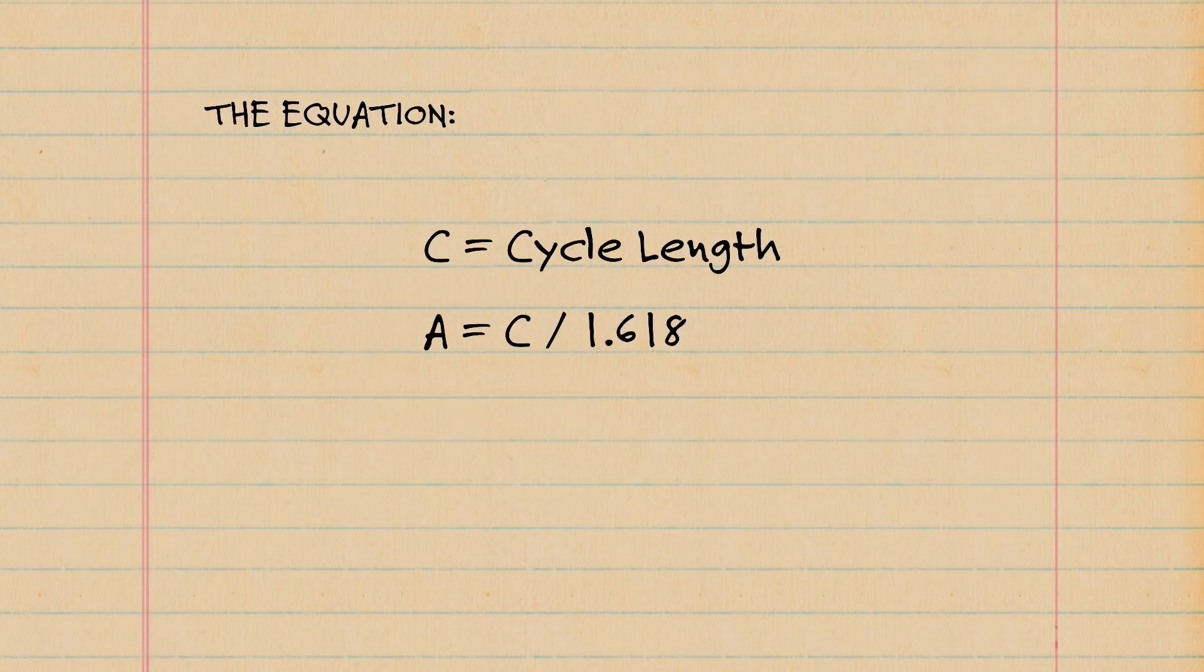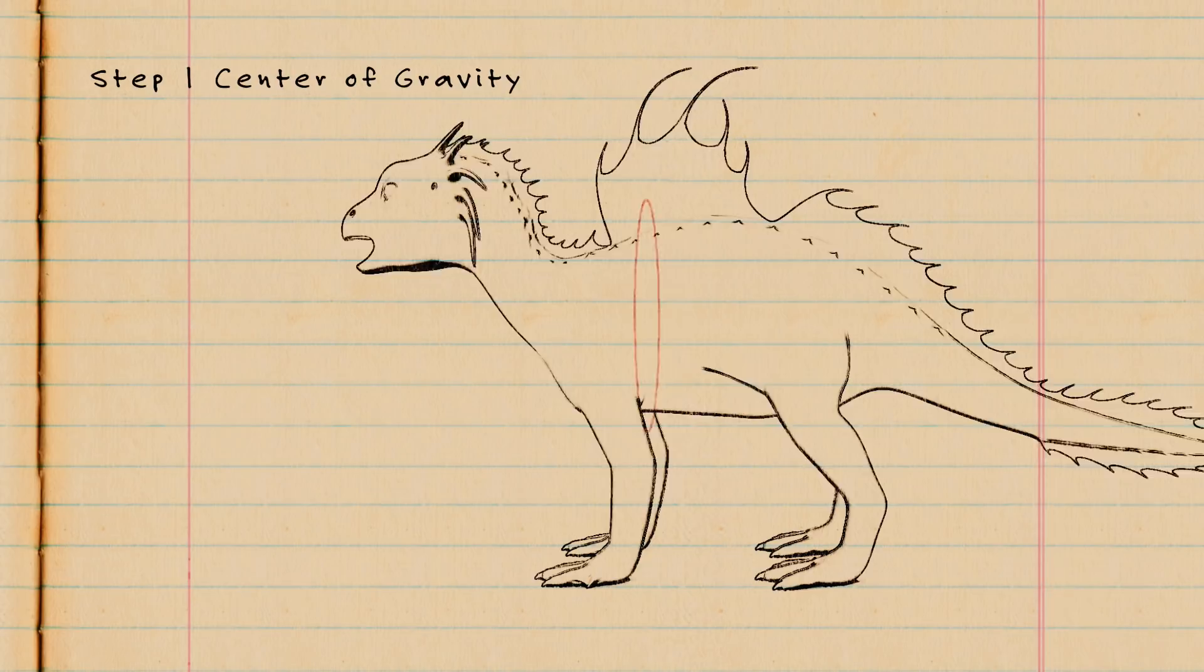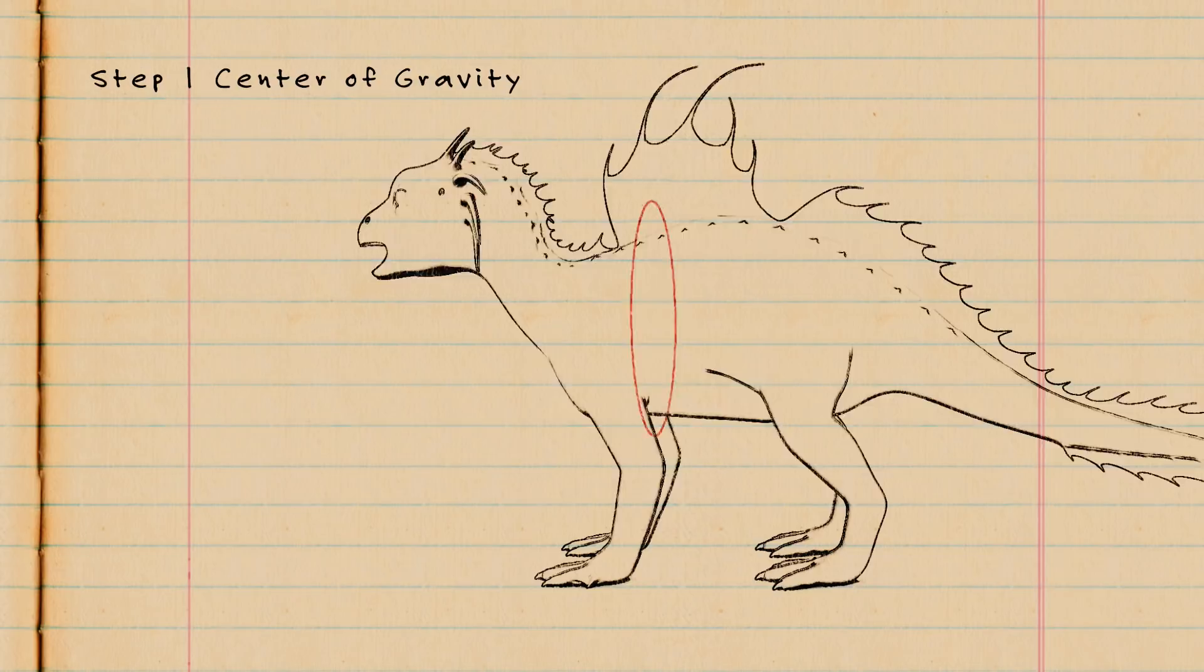So the first thing to do is simulate the inertia of the walk cycle, which in essence is a series of controlled falls. We do this by starting with the center of gravity, or COG. The rise and fall will happen twice per 24-frame cycle. In applying the formula, C equals 12.